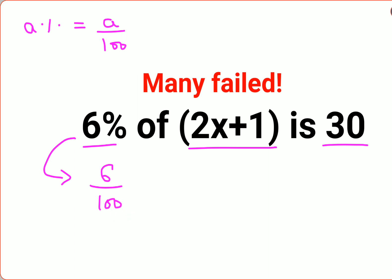So 6% has to be written as 6/100. 'Of' stands for multiplication. So we have 6/100 × (2x+1) = 30.